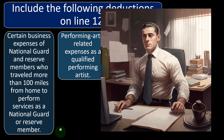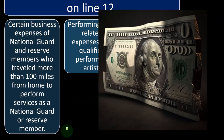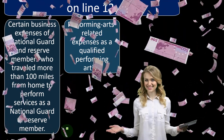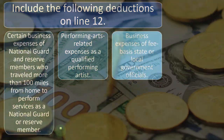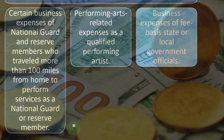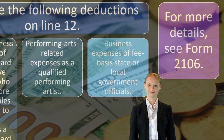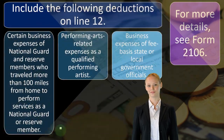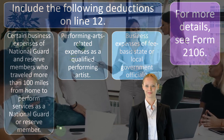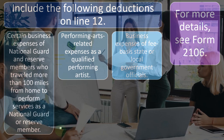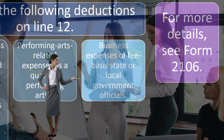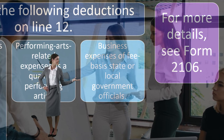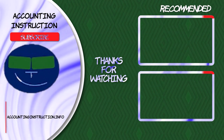If you're in the military, you might still be able to get a deduction for moving, but if the military compensates you for the move, you wouldn't get the deduction — again, to avoid double-dipping. The other qualifying categories are performing arts-related expenses as a qualified performing artist, and business expenses as a fee-based state or local government official. For more details on these very specific categories, refer to Form 2106.